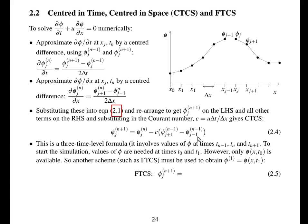This is a three-time-level formula. To calculate phi at time level n+1, you need two previous time levels: n and n-1. This makes it hard to get started, because when you first start the simulation you've only got your initial conditions at one time level. So for the first time step, you need to use another scheme — for example, forward in time, centred in space — to calculate phi at time level 1. Based on what we've done so far, you should be able to write down that equation.